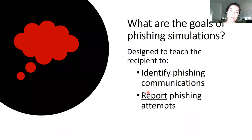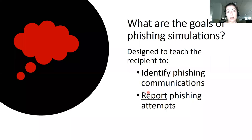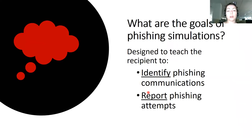The goals of phishing simulations are essentially to teach recipients — your employees, partners, whoever — to identify phishing communications and report phishing attempts. You want them to identify phishing because you don't want them to click, but you also want them to report so you can identify parameters and block bad senders at your email servers, anti-spam filters, or whatever measures you have in place. The more reporting employees do, the better it is for protecting your environment.